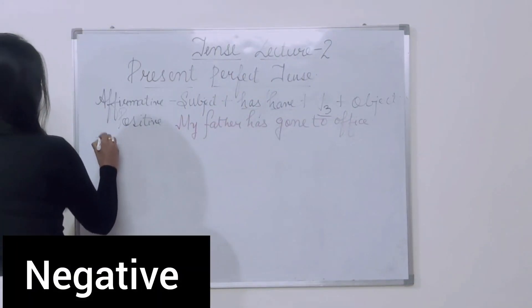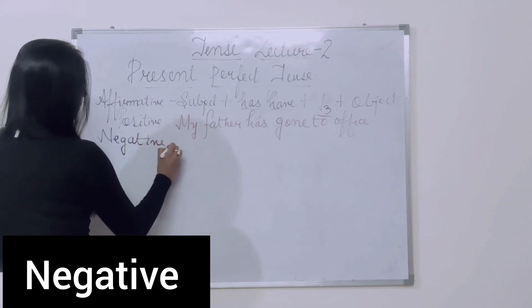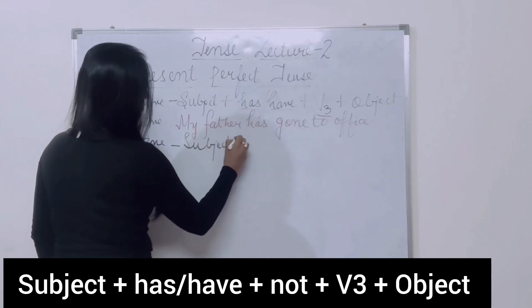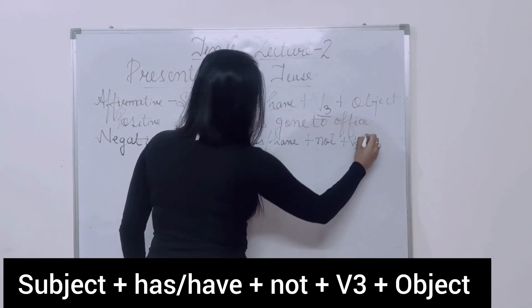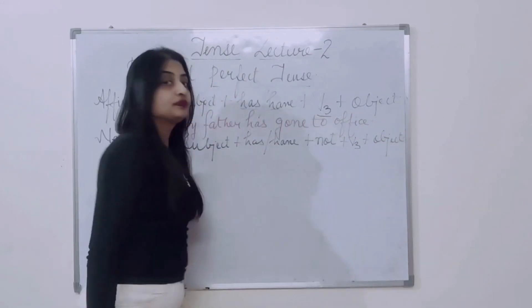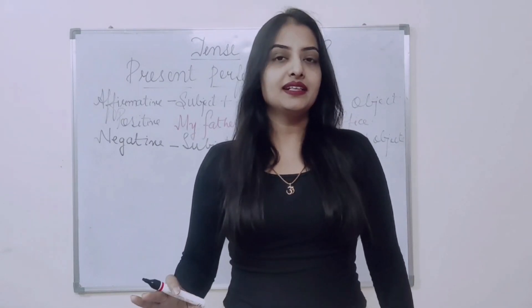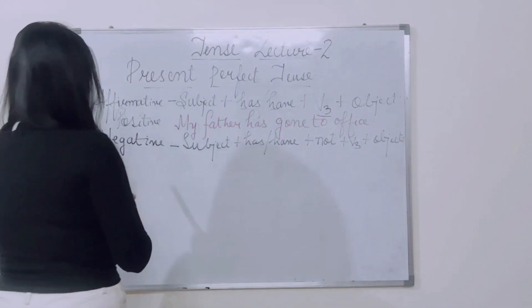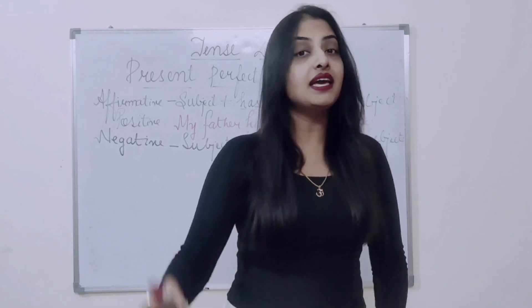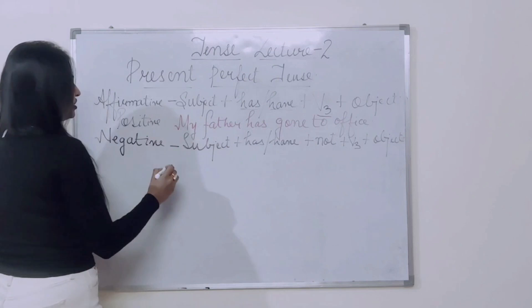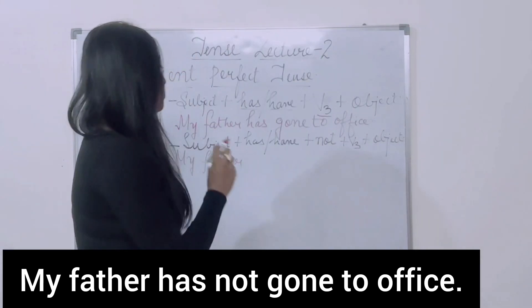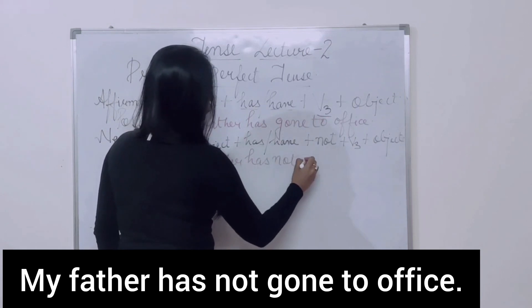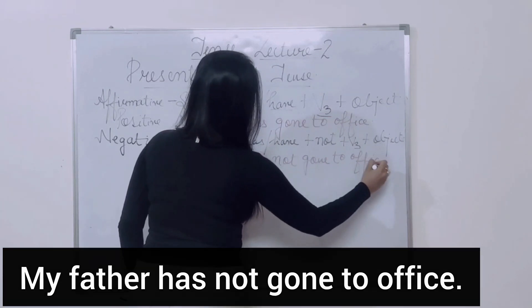The negative structure is: Subject + has / have + not + V3 + Object. For example: My father has not gone to office — मेरे father office नहीं गए हैं. I am sure he is at home reading the newspaper.